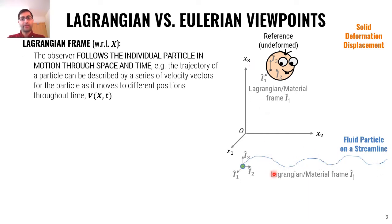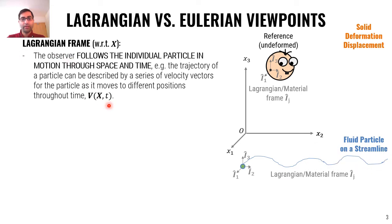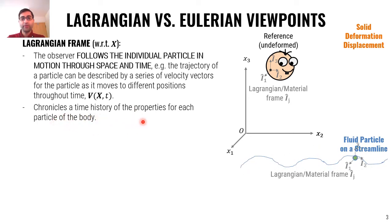For fluids, the Lagrangian frame means looking at the particle and moving with it through time and space. For example, the trajectory of a particle can be described by a series of velocity vectors for the particle as it moves to different positions throughout time. Everything in the Lagrangian frame is with respect to capital X and shown with capital letters — for example, capital V. It basically chronicles a time history of each particle of the body.